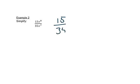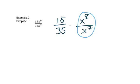Let's look at this. We'll deal with the 15 over 35 in a second, and put this back together after we're done thinking about it. First, let's think about the letters like we just talked about. There are 8 x's on the top and 7 x's on the bottom, so how many extra x's are there? There's 1 extra x, and it would be on the top because there are more x's on the top to begin with.